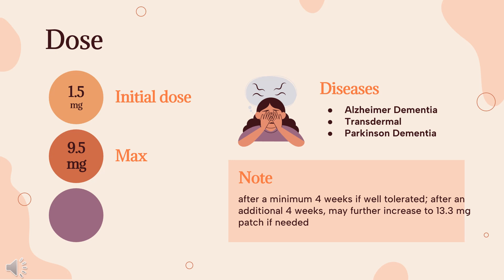Transdermal (Alzheimer's): Indicated for mild, moderate, and severe dementia of the Alzheimer's type. Initial: Apply 4.6 mg Q24HR. Dose titration: May increase dose to 9.5 mg Q24HR after a minimum 4 weeks if well tolerated. After an additional 4 weeks, may further increase to 13.3 mg patch if needed. Effective dosage range for mild to moderate disease: 9.5–13.3 mg/24HR. For moderate to severe disease, effective dose is 13.3 mg per 24 hours. Replace with new patch Q24HR.